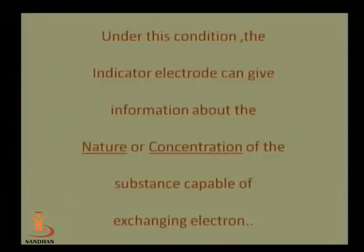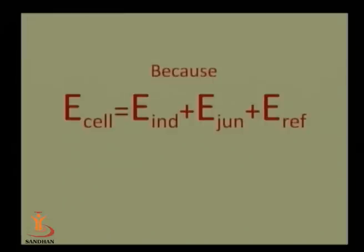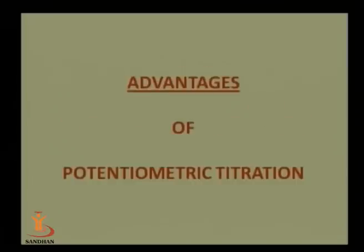When the junction potential value is constant and very low, the nature and concentration of the substance capable of exchanging electrons is directly proportional to the electrode potential measured by the indicator electrode. So the indicator electrode measures the potential, which is directly proportional to the changes in ions in the solution. E_cell = E_indicator + E_junction + E_reference, but since E_reference and E_junction are constant, E_cell is directly proportional to E_indicator.